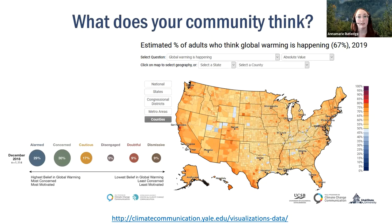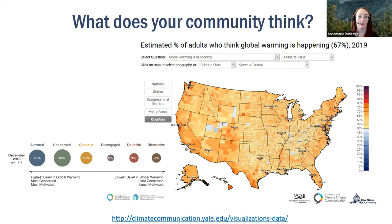The first place to start with climate change communication is to know your audience and what your community thinks. Here we have a map of trends across the US on beliefs, risk perceptions, policy support, and behaviors around climate change from the Yale program on climate. In this visualization, 67% of adults think global warming is occurring. There are also six audiences displayed, ranging from alarmed about climate change to dismissive. The majority — 59% — fall into the alarmed or concerned bubbles, but almost a fourth of US adults are disengaged, doubtful, or dismissive.